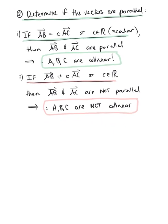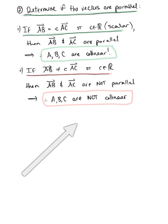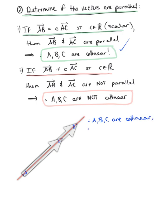Let's think about what this looks like graphically. Here is vector AB with initial point at A and terminal point at B. Here is our second vector AC with the same initial point at A and terminal point at C. These vectors are parallel — they're scalar multiples of each other. To confirm that the three ordered triplets are collinear, we can draw a line along the vectors. Therefore, ordered triplets A, B, and C are collinear if the vectors composed by these points are parallel.